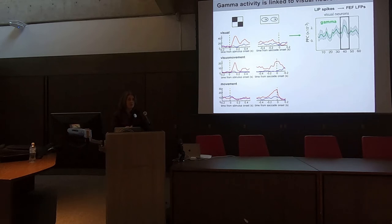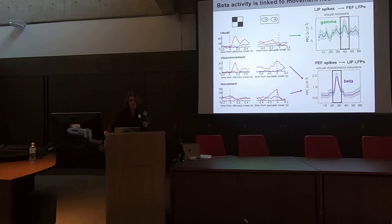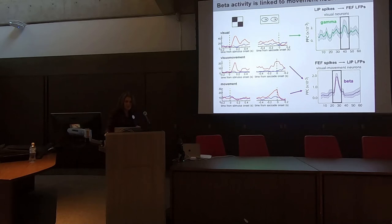In opposition to that, the spiking activity of oculomotor neurons in the frontal eye fields was associated with beta activity within FEF and also in LIP. This appears to be a signal sent from oculomotor neurons to LIP — you could call it a feedback signal, but more specifically, in the motor system beta activity is typically associated with a suppression of movements. And here we think it represents a suppression of eye movements.